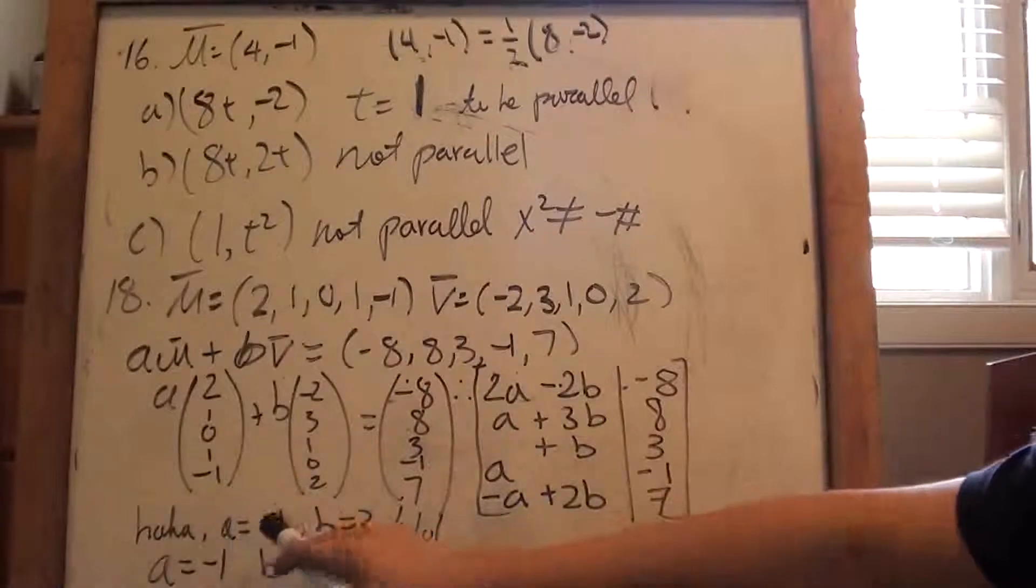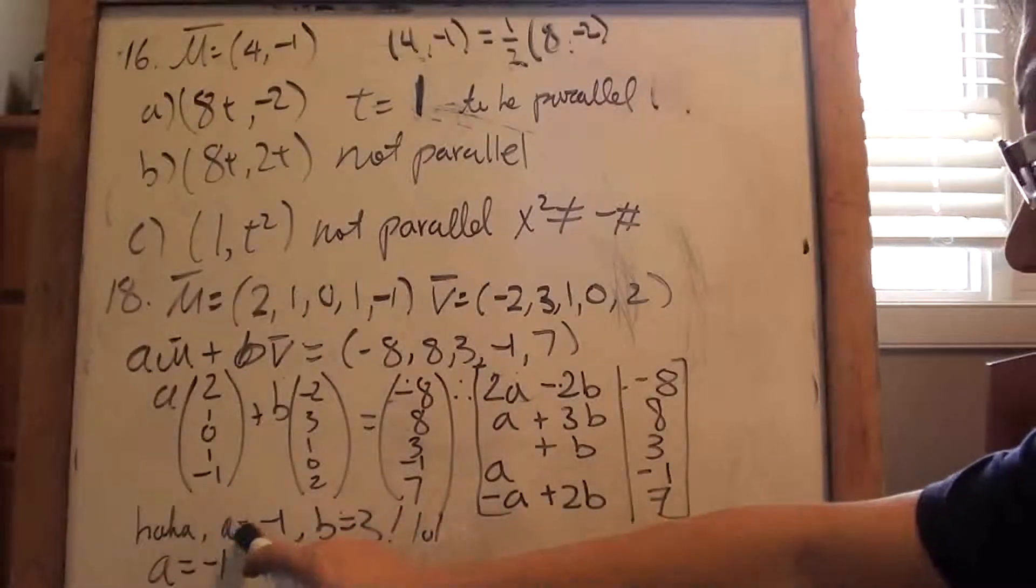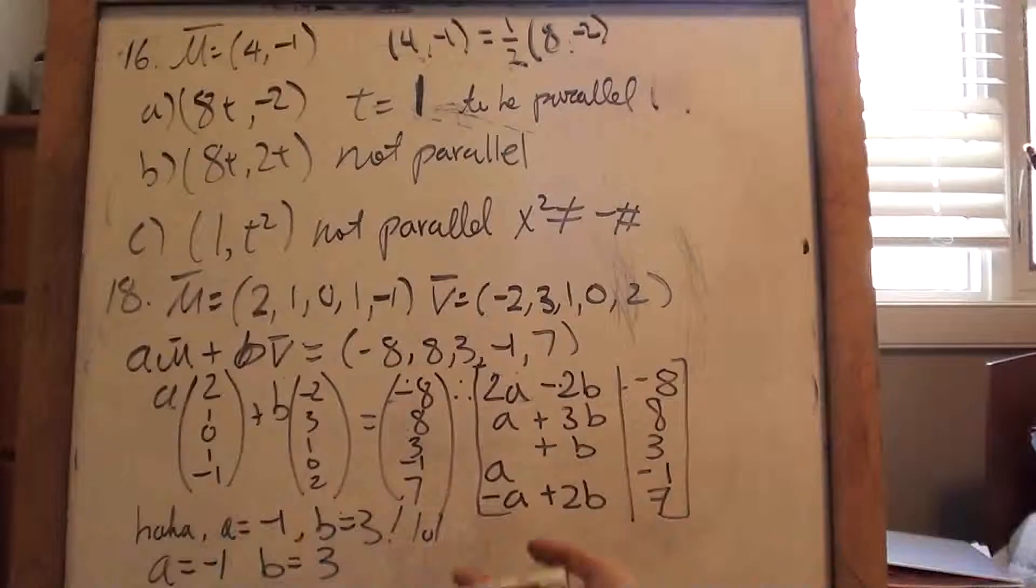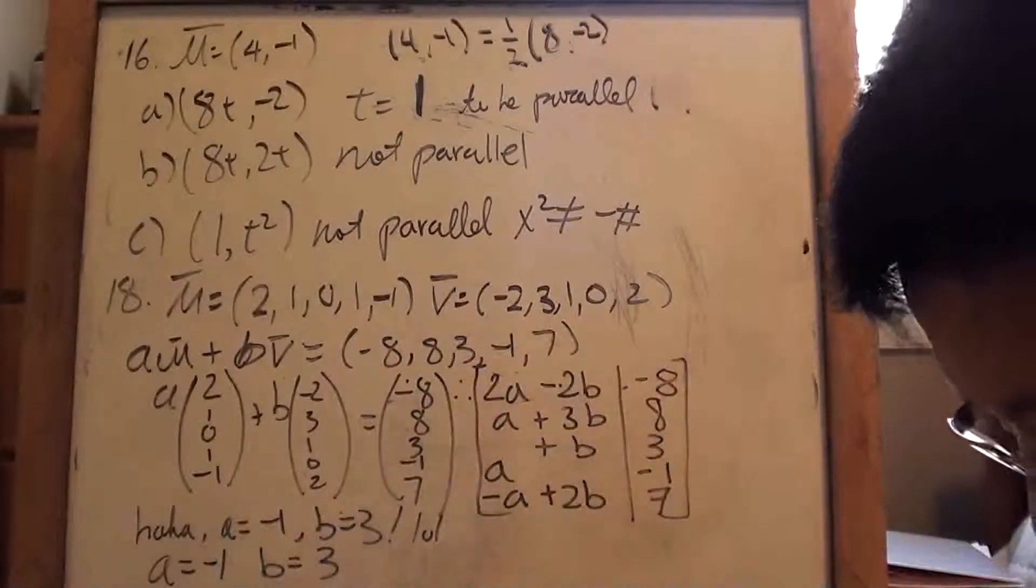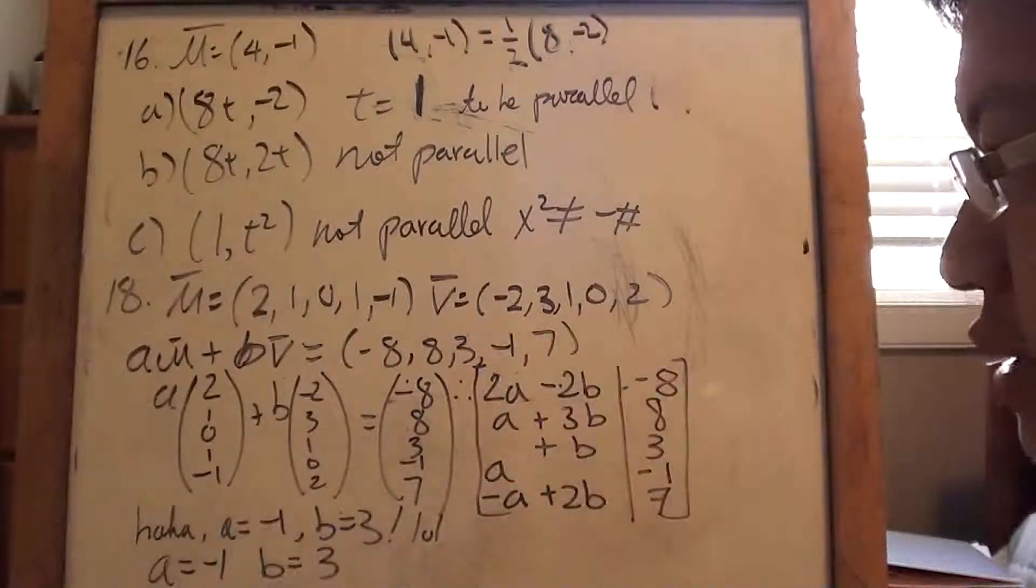Anyways, so, we have, sorry, I got a little excited, but a equals to negative 1 and b equals 3. So, that's all we need to write. I don't know if 17 will be that simple. I'd imagine for 17, once you come up with, once you put it in the augmented matrix format.